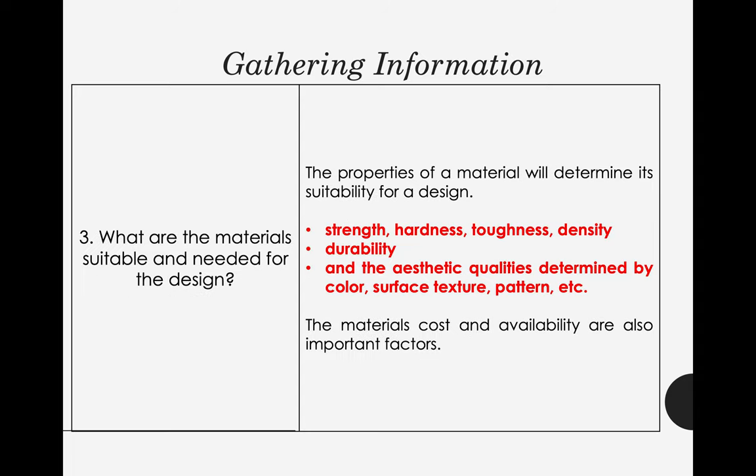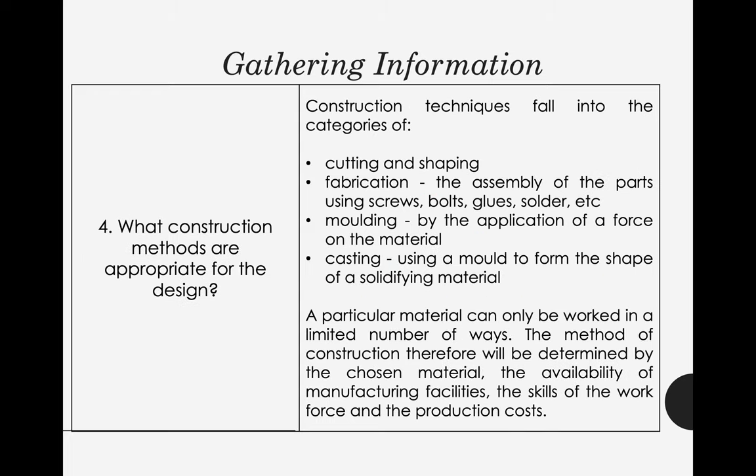The third question: what materials are suitable and needed for the design? If you're talking about the materials or specifications of your robot, we need to go back to the purpose. For example, if the robot is for outdoor use but your materials are only suited for indoors — what if it rains? The robot will not function because it got wet, so you need to consider that fact.